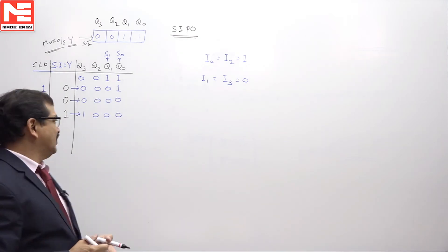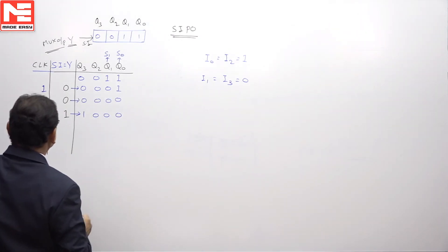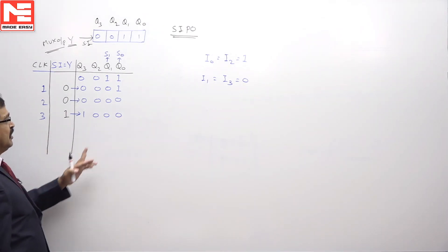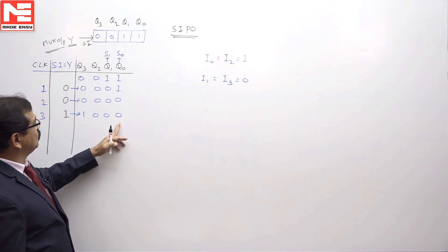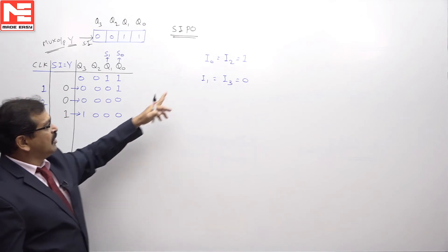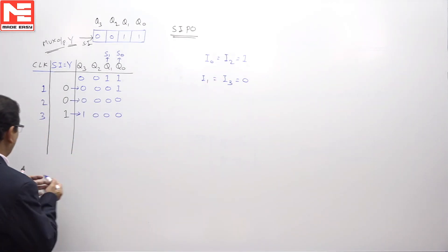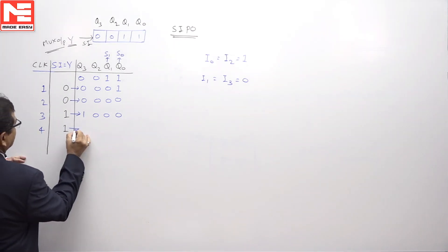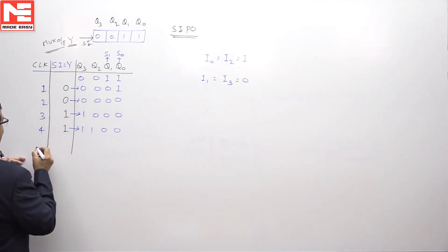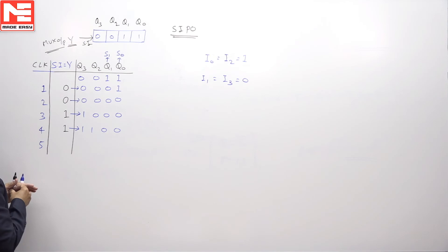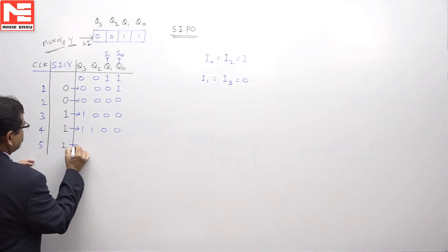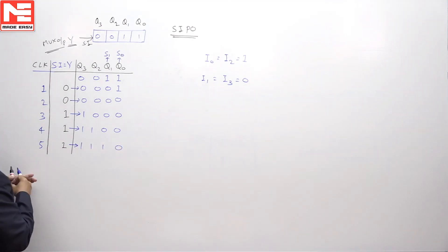Since S1 and S0 are still 0, 0 before the fourth clock pulse, the selection remains line 0, which is connected to 1, so serial input is 1. After the fourth clock pulse we get a new register state. Before the fifth clock pulse, S1 and S0 are again 0, 0, giving serial input 1. After the fifth clock pulse, the circuit is still not back to the initial state, so we go further.